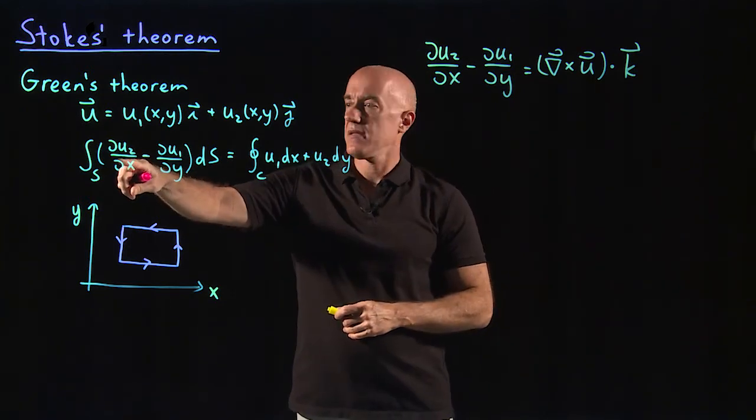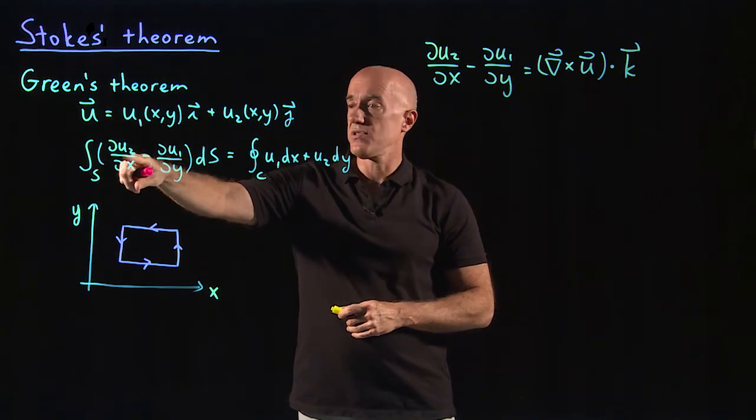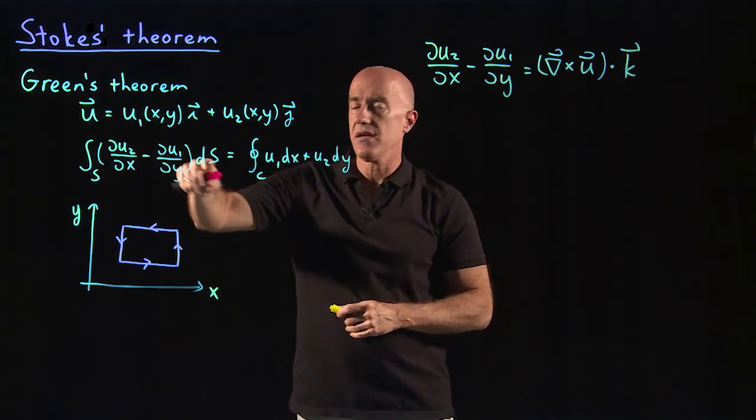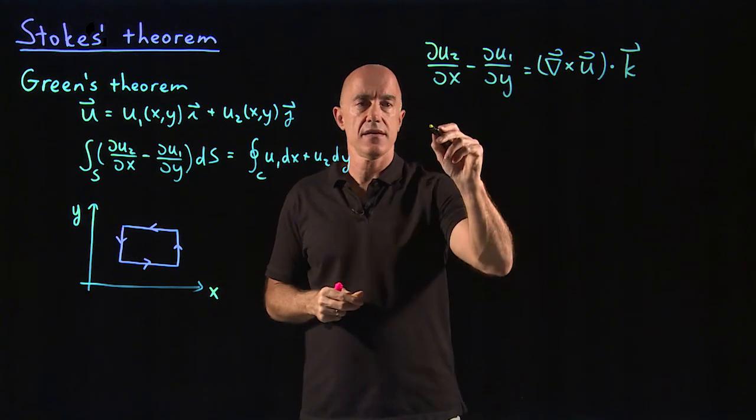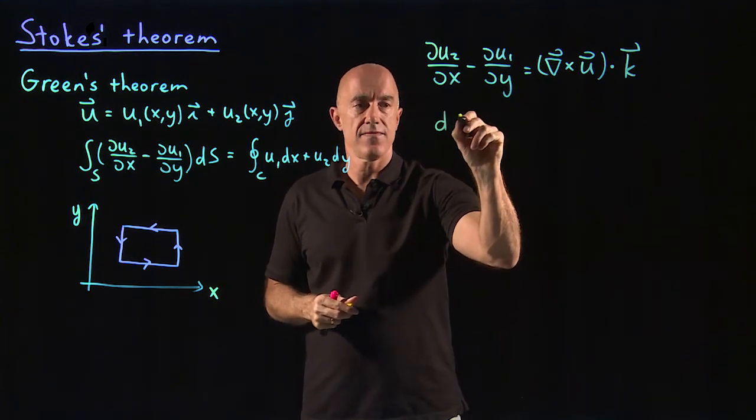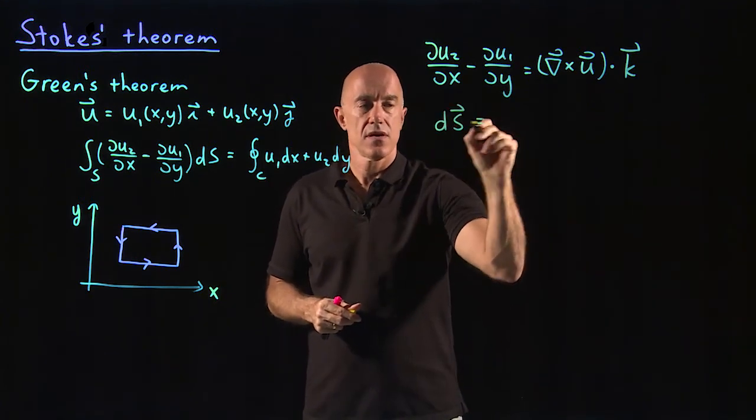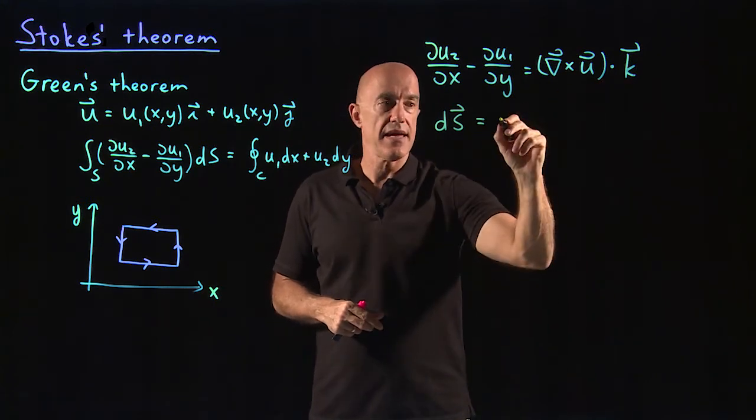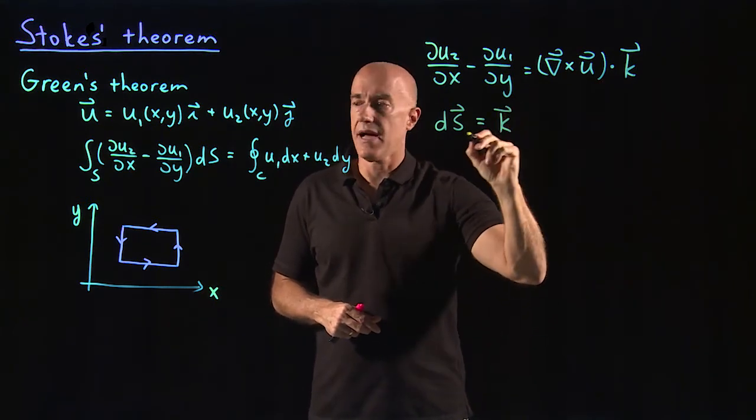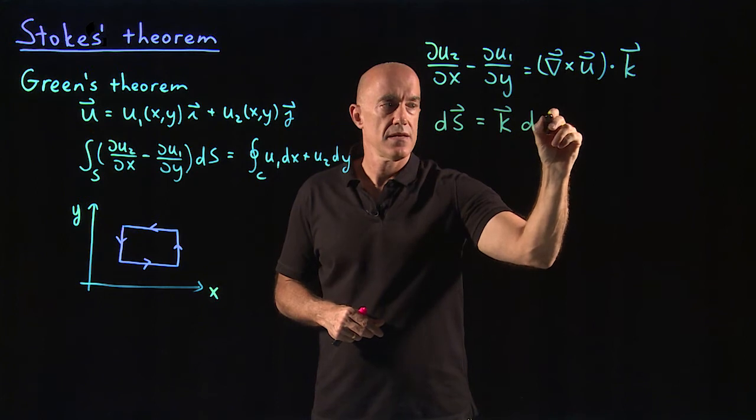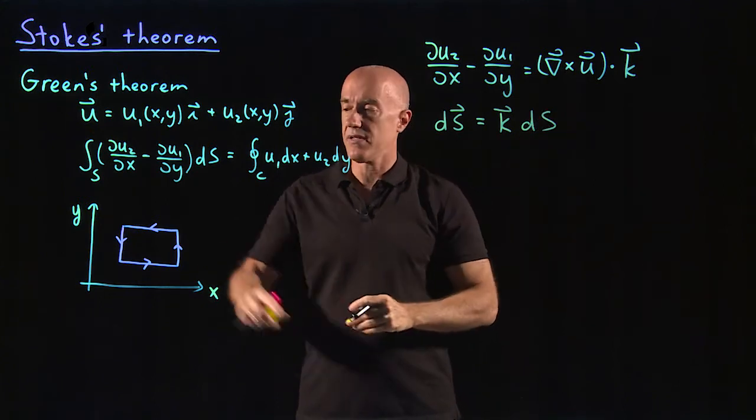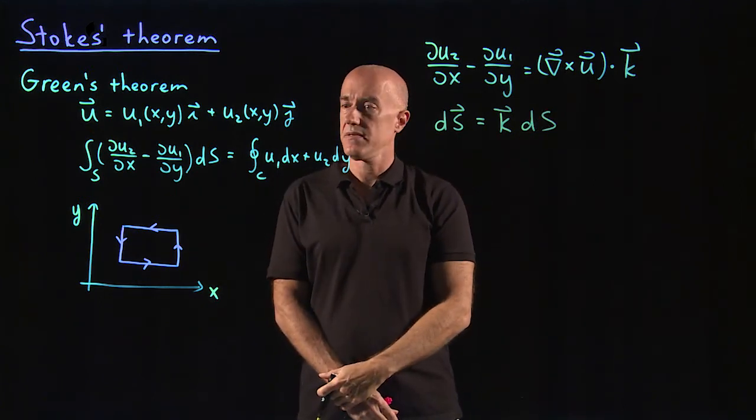In order to get del cross u dot k here, we should define ds vector to be k times ds scalar times the surface area.